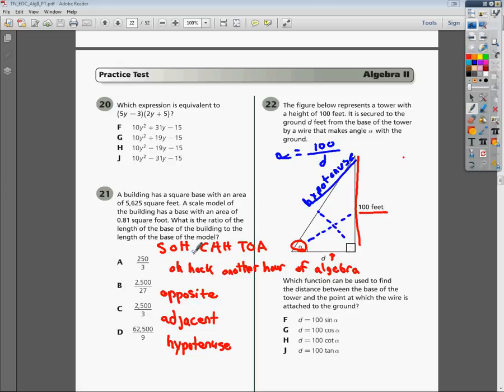Again, going back to our trig, oh heck, another hour of algebra, we have opposite over adjacent means tangent, so that means that tangent of alpha equals 100 divided by D. Well, now you just have to solve this equation to get D to be on one side by itself.